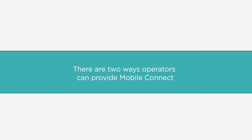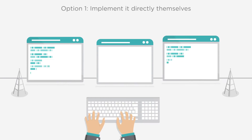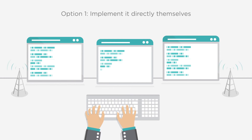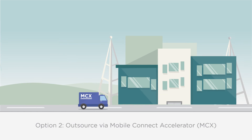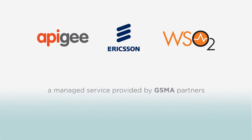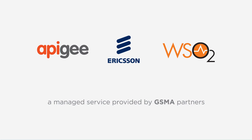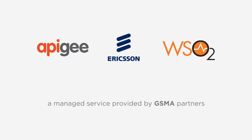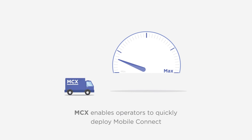Operators have two ways in which they can provide MobileConnect. They can choose to implement the service directly, or alternatively they can completely outsource using the MobileConnect accelerator known as MCX — a managed service provided by a number of partners who the GSMA have teamed up with. MCX enables operators to deploy MobileConnect faster than their internal systems might allow.